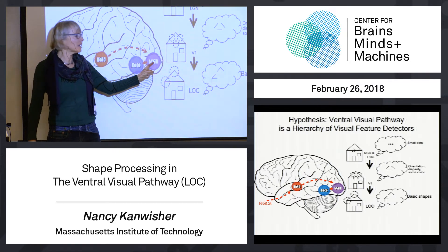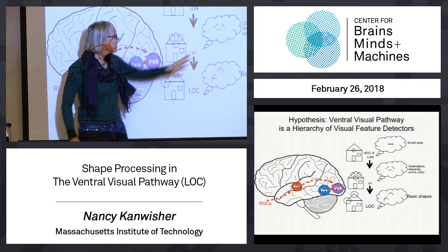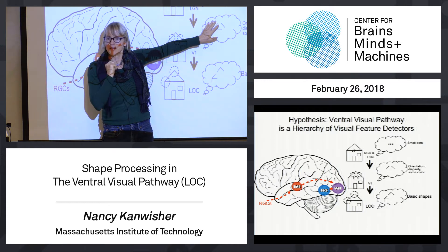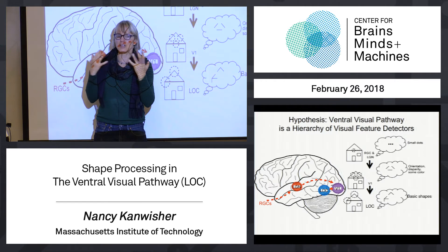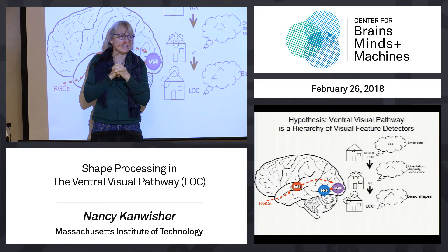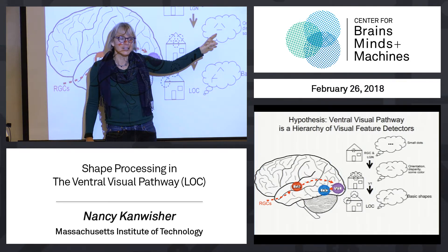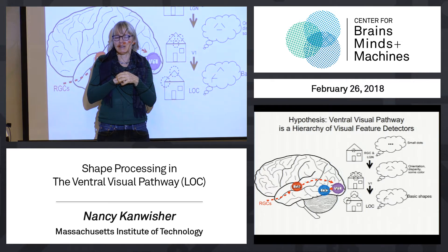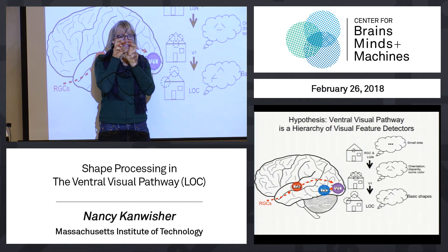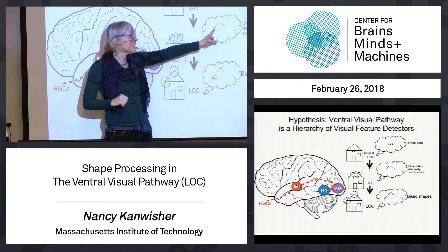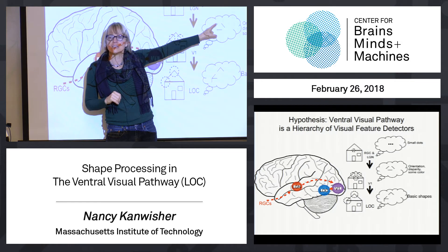When you get up to primary visual cortex, you find selectivity for orientation — cells that like this orientation but not that one. We're building up complexity in what cells respond to selectively. Going from LGN up to V1, if you take a bunch of lateral geniculate cells each responding to little dots of light, align them in a row, you can get an orientation detector. That's one possibility for how orientation selectivity is computed in V1.